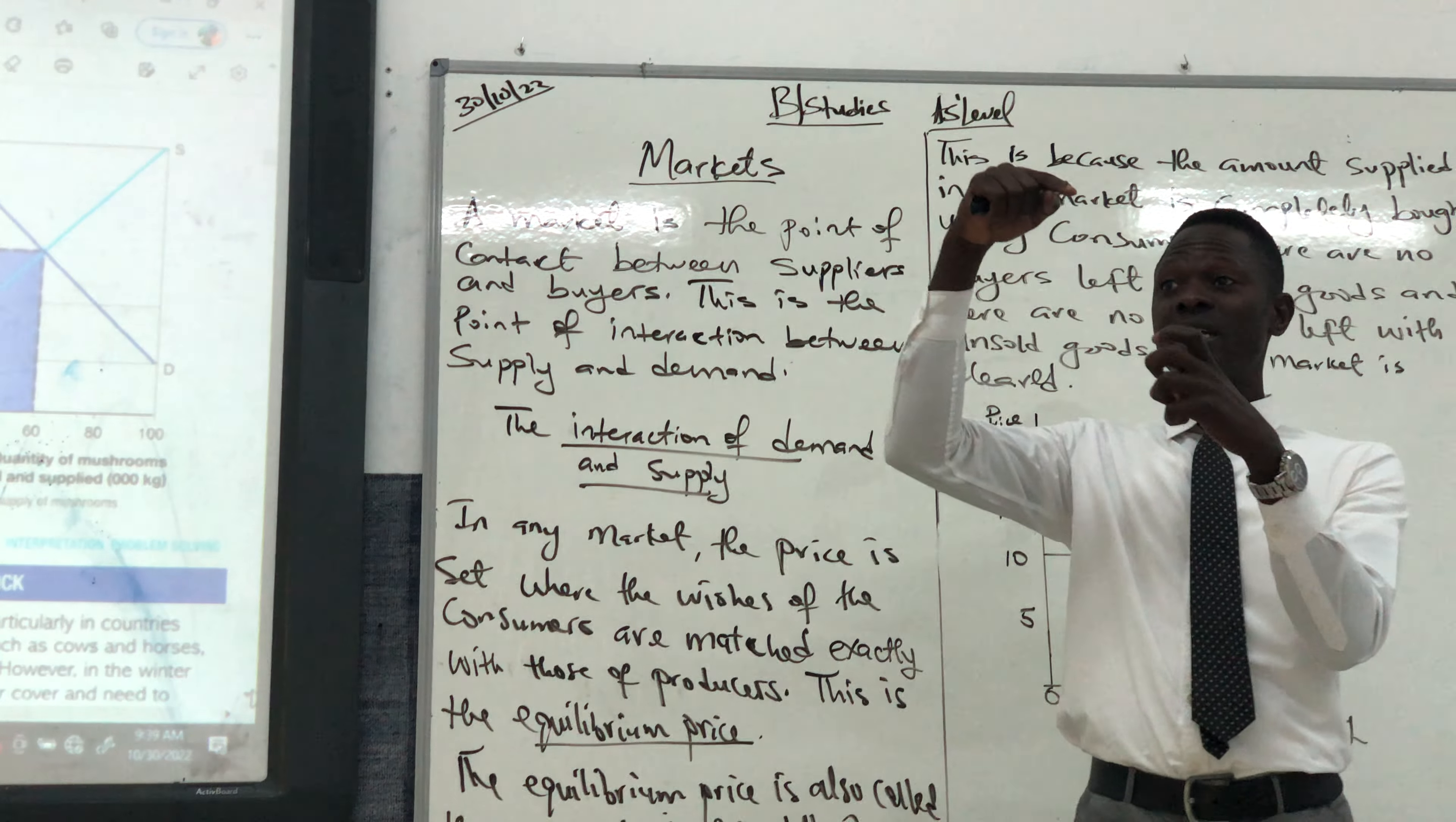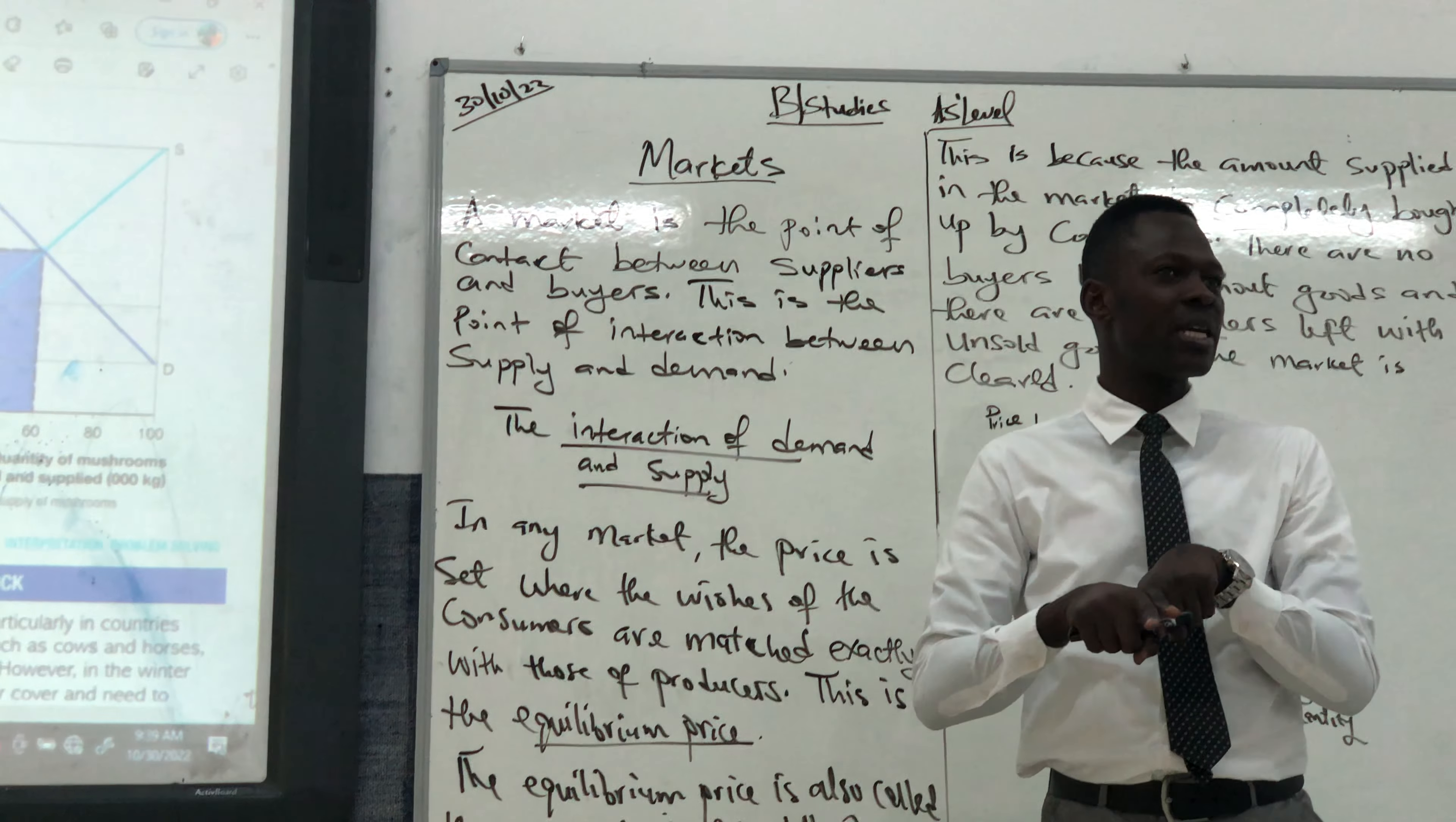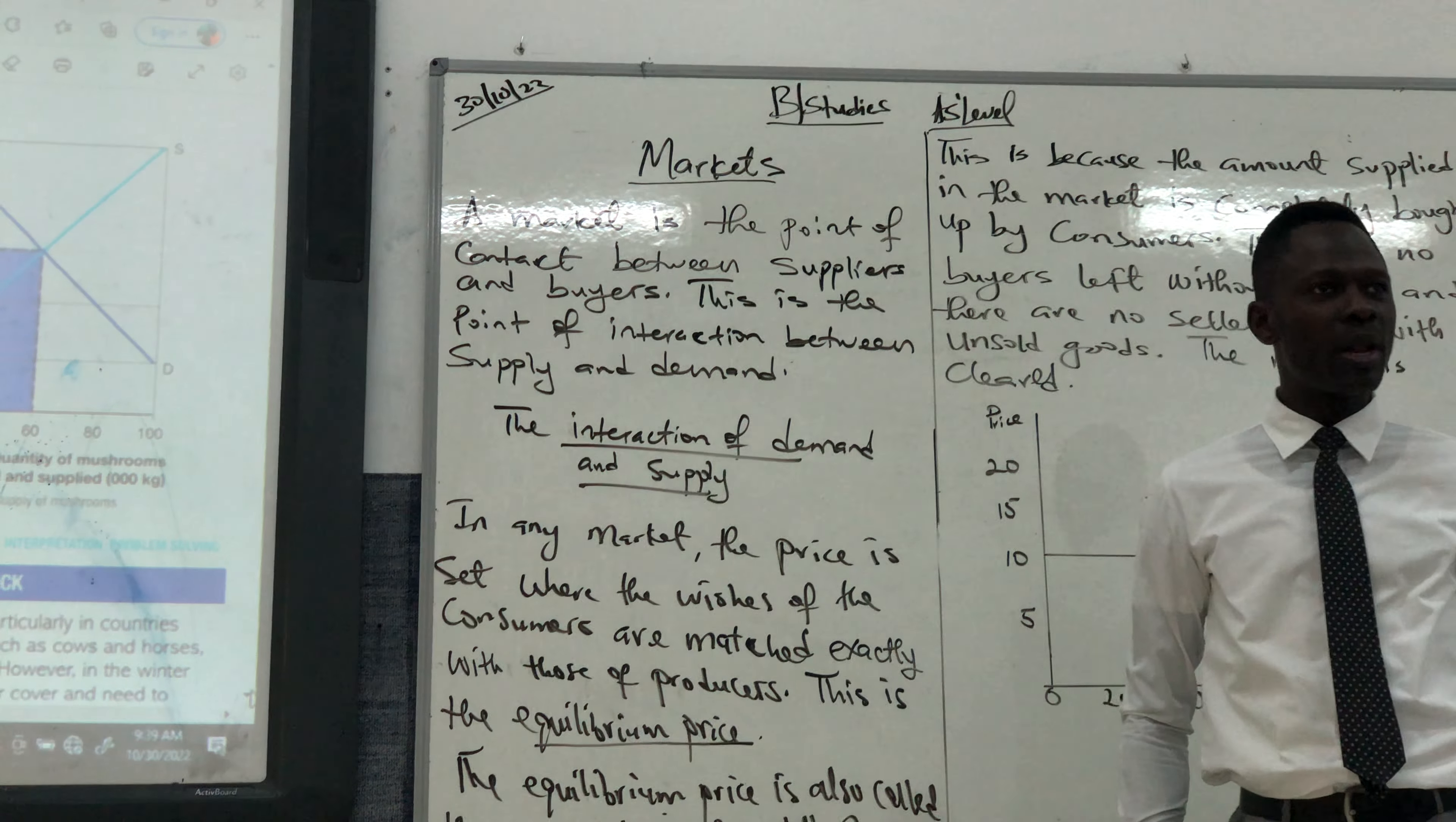There's always a point of contact between the individual or the firm that wants to sell and that individual who wants to buy. That's the market, which is what we're talking about - interaction between demand and supply, or buyers and suppliers.